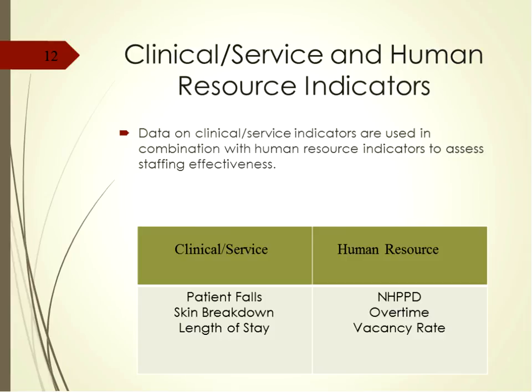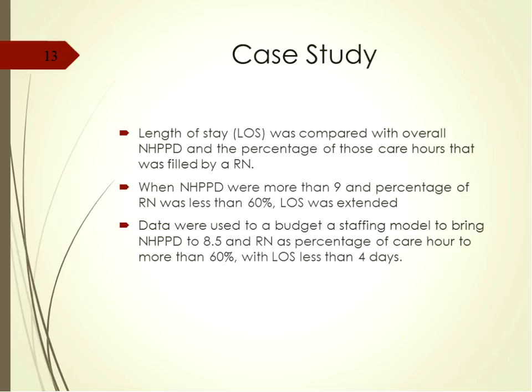There are clinical service and human resource indicators used together to assess staffing effectiveness. Clinical service indicators include patient falls, skin breakdown, and length of stay. Human resource indicators include nursing hours per patient day, overtime, and vacancy rates.